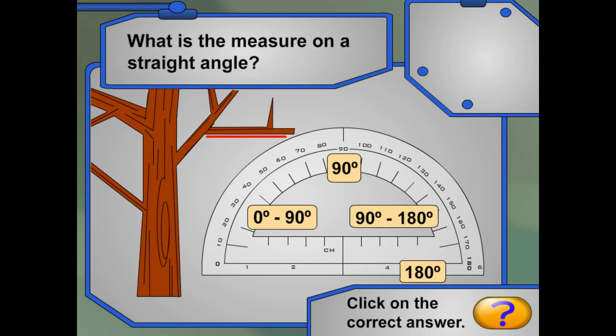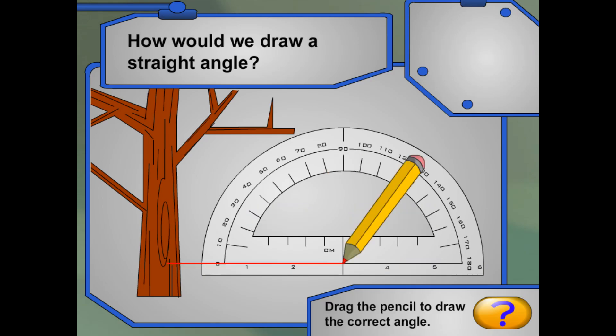This branch goes straight across to the other branch. They're at the same level. How cool! What is the measure for a straight angle? Right! A straight angle measures 180 degrees. Can you draw me a straight angle? A straight angle measures 180 degrees. That's a straight line.